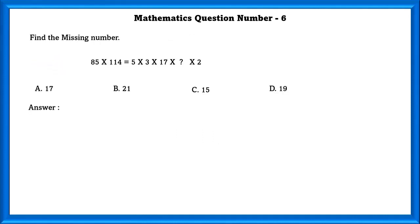Mathematics question number 6. Find the missing number. 85 into 114 is equal to 9690. So in the other side also it has to be 9690. In order to find the question mark, we have to divide 9690 by 110, which is equal to 90.